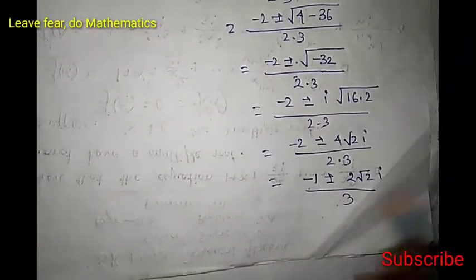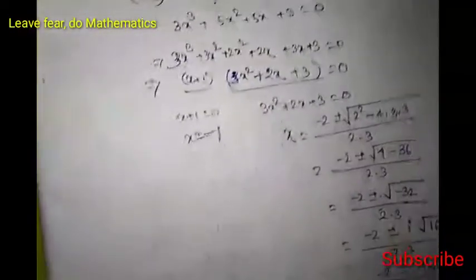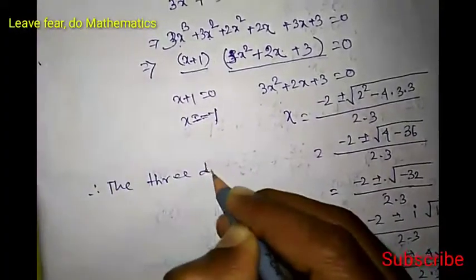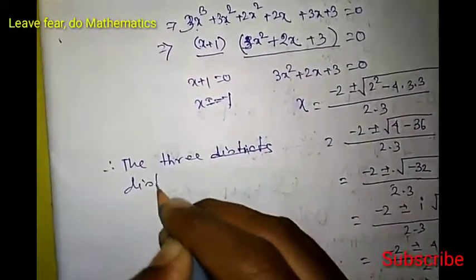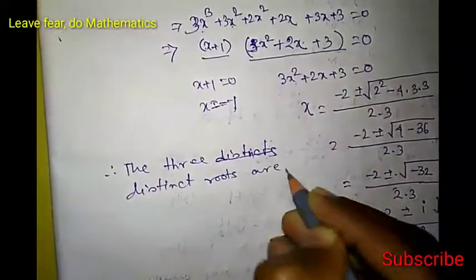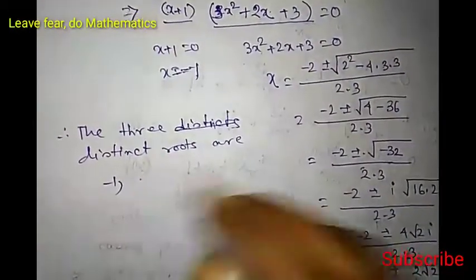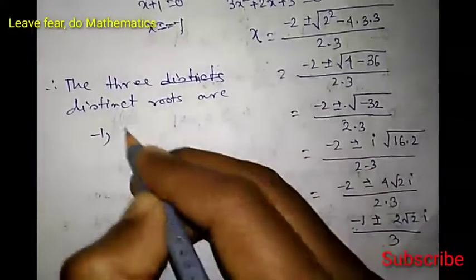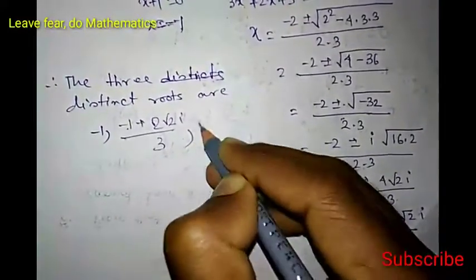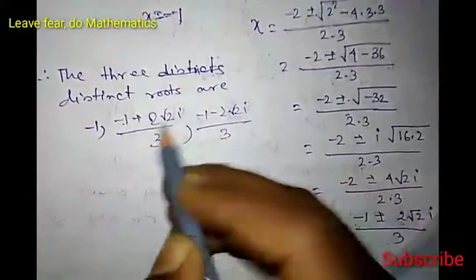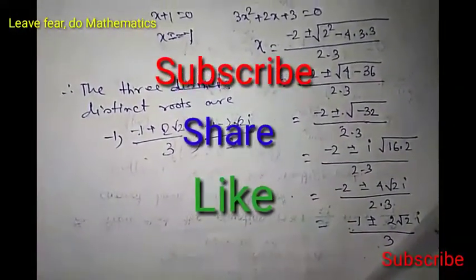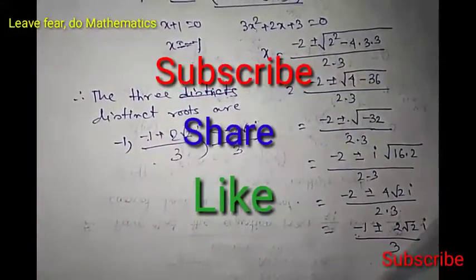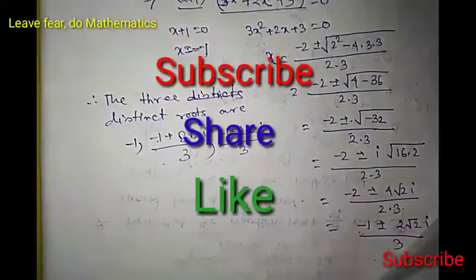So the two complex roots are (−1 + 2√2·i) / 3 and (−1 − 2√2·i) / 3, which are complex conjugates and will have the same modulus. The three distinct roots are: −1, (−1 + 2√2·i) / 3, and (−1 − 2√2·i) / 3. Thank you friends for watching the video. If you like the video, please subscribe to the channel and share with your friends. Please stay tuned — we will come back shortly with this kind of video again. Thank you.